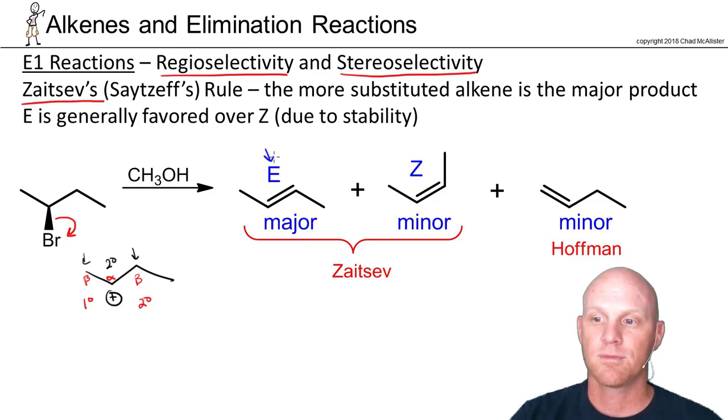In this case, forming it between carbons 2 and 3 leads to two stereoisomers, E and Z. And then forming it between carbons 1 and 2 is going to lead to our minor product, the Hofmann product. Zaitsev is the major, and you've got E and Z possible. Here's the stereoselectivity. E is going to be favored over Z generally, simply and purely due to steric effects. Your regioselectivity is Zaitsev's law, and your stereoselectivity, if you've got E and Z both possible, E is generally favored over Z due to steric effects.